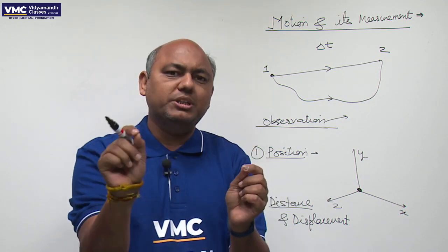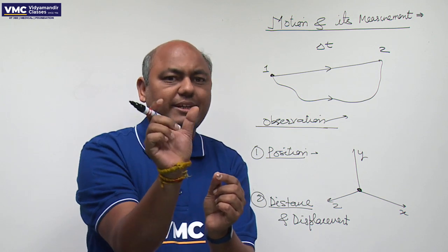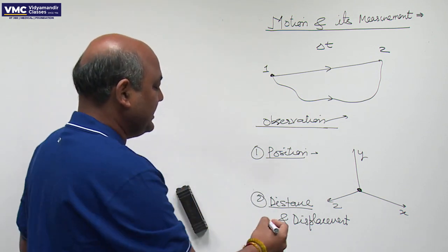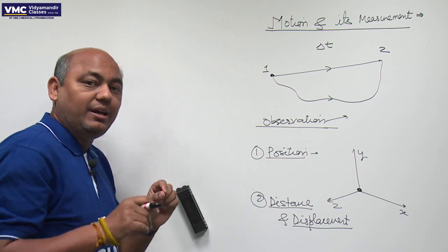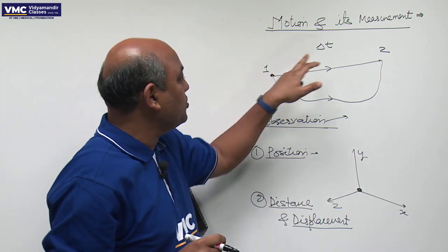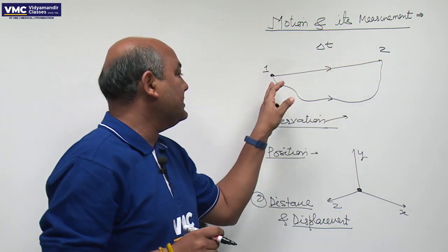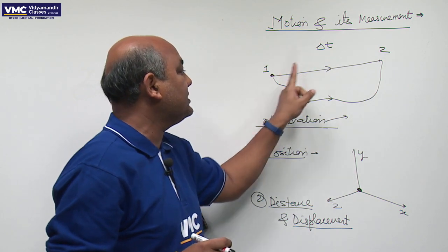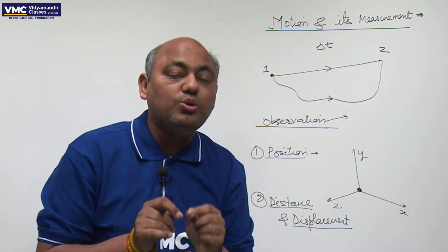When you go to another place, the total value shows the total length. That is called distance. Second is displacement. Displacement may be, if you talk about it, if we go from one to two positions, we go by any path.